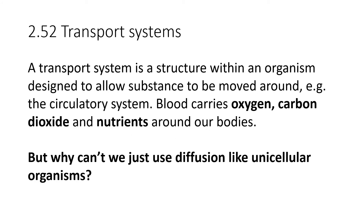Now, specification point 2.52: transport systems. What is a transport system? A transport system is a structure within an organism designed to allow it to move things around its body. For example, we have the circulatory system in humans — blood carries oxygen in haemoglobin inside red blood cells, carries carbon dioxide in the blood plasma, and carries nutrients in the blood plasma, transporting all of this around our bodies.